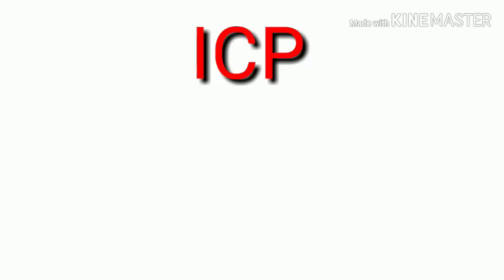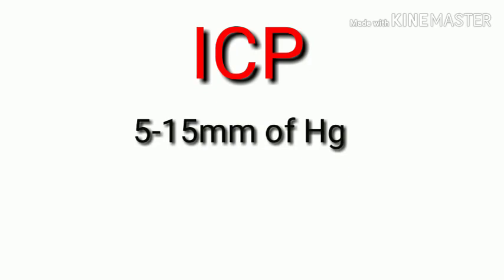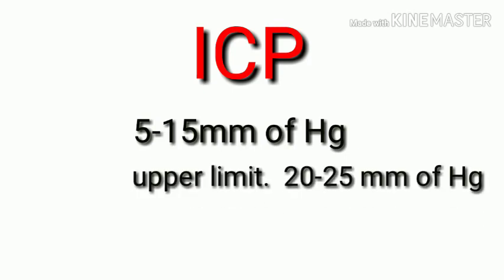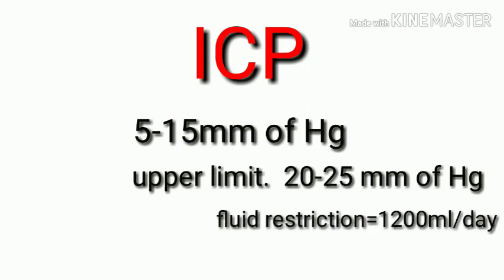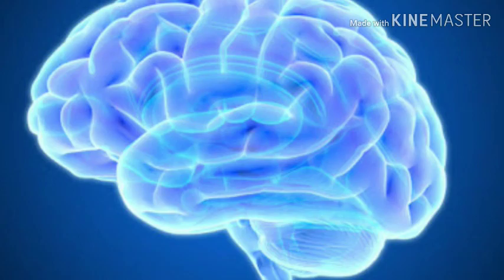Next, intracranial pressure (ICP) is the pressure inside the skull, in the brain tissue and cerebrospinal fluid. ICP is measured in millimeters of mercury. At rest it is normally 5 to 15 mmHg for adults, and 20 to 25 mmHg is the upper limit of normal. Treatment to reduce ICP may be needed in cases of raised ICP, and fluid restriction should be maintained up to 1200 ml per day.